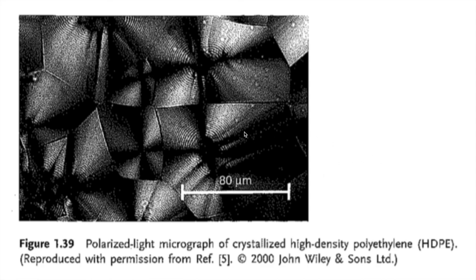Isotropic materials — including amorphous materials and cubic materials — do not exhibit contrast in polarized light microscopy because they cannot change the orientation of the polarized light through the analyzer, giving zero amplitude. However, if you stretch an isotropic material, you can actually induce anisotropy. So polarized light microscopy can also be used to look at stress and strain in stretched materials.